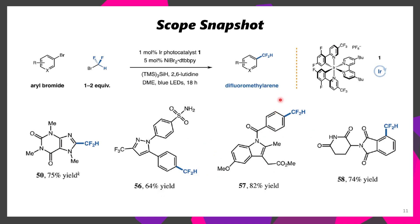To give you a snapshot of the scope, here are a few examples. This chemistry tends to tolerate a wide range of functional groups as it occurs under metallophotoredox conditions. Metallophotoredox is notoriously good at tolerating functional groups, especially if it's coming from the MacMillan group, it would seem.